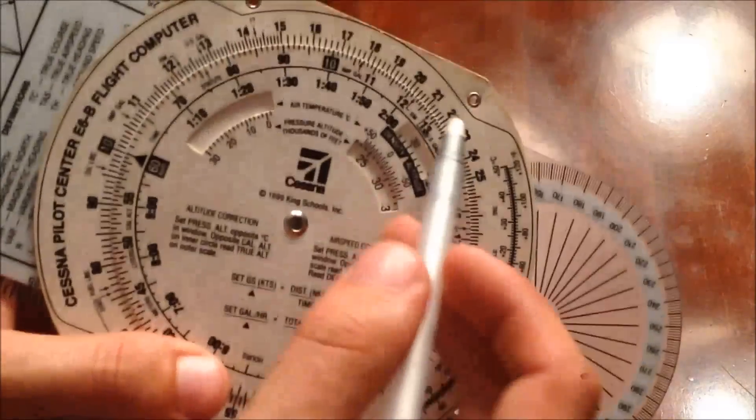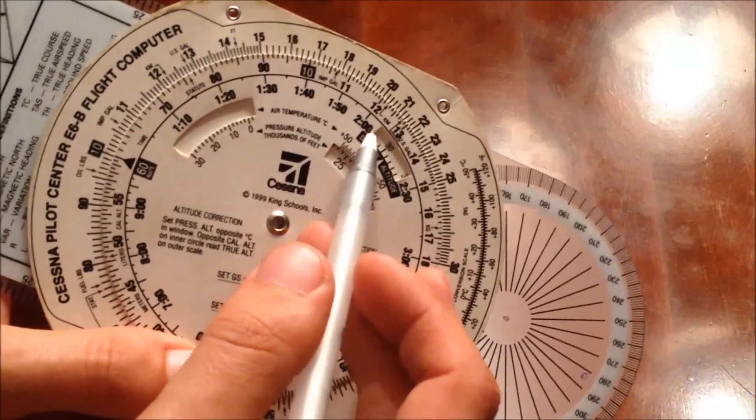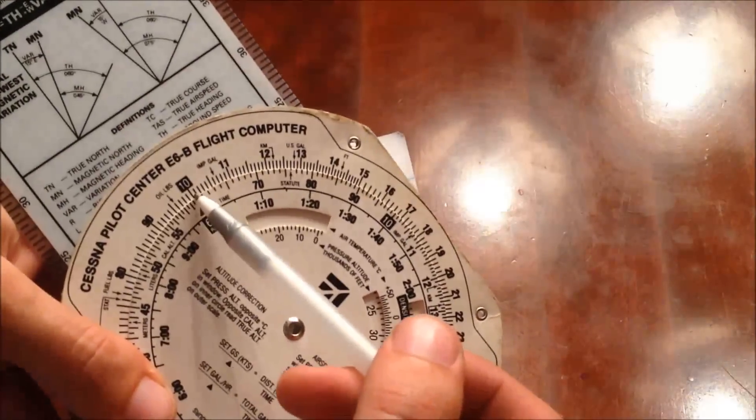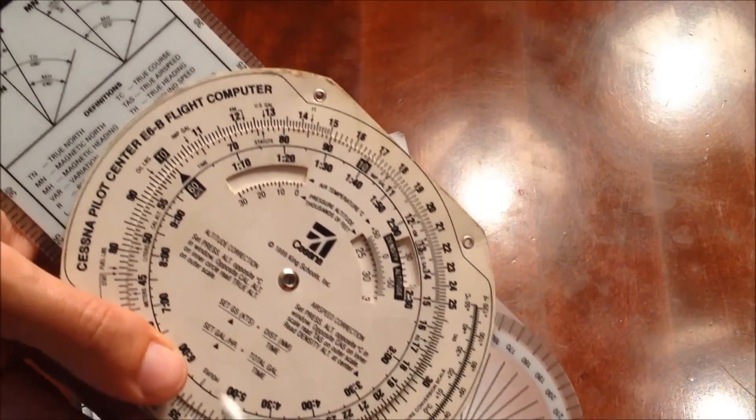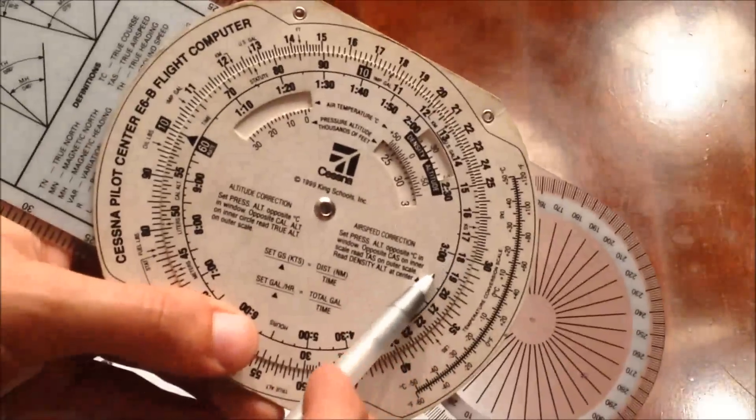Notice, distance is on the outer scale, and time is on the inner scale. So now we don't have to change if our ground speed remains constant. We don't have to change the wheel at all. We just have to read for that different distance how long is it going to take us to get there.